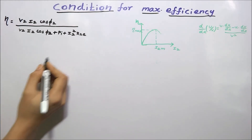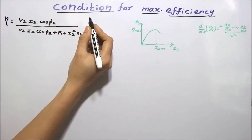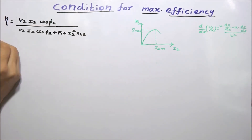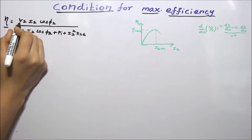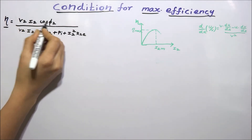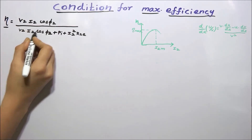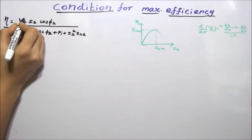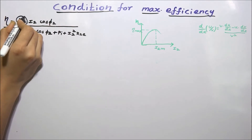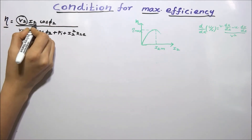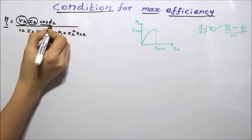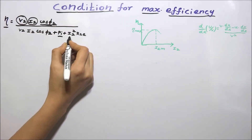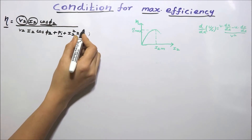In this tutorial we will see the condition at which the efficiency of a transformer will reach the maximum value. The efficiency of the transformer is written as V2·I2·cos(φ2) divided by V2·I2·cos(φ2) plus Pi plus I2²·R2E, where V2 is the terminal voltage across the load, I2 is the load current, cos(φ2) is the load power factor, Pi is the iron loss, and I2²·R2E is the copper loss.